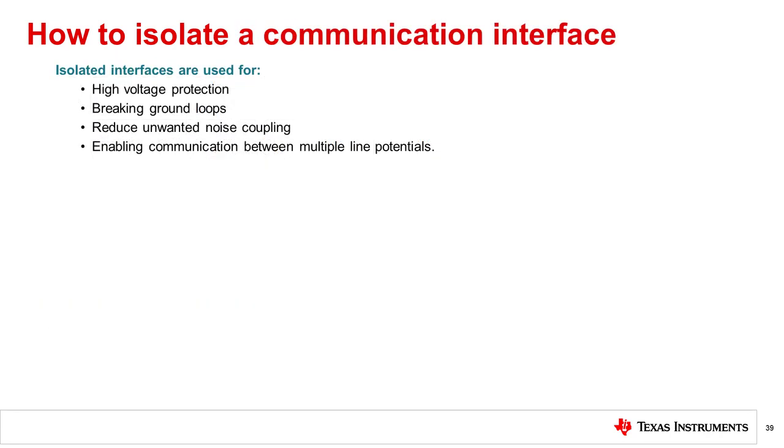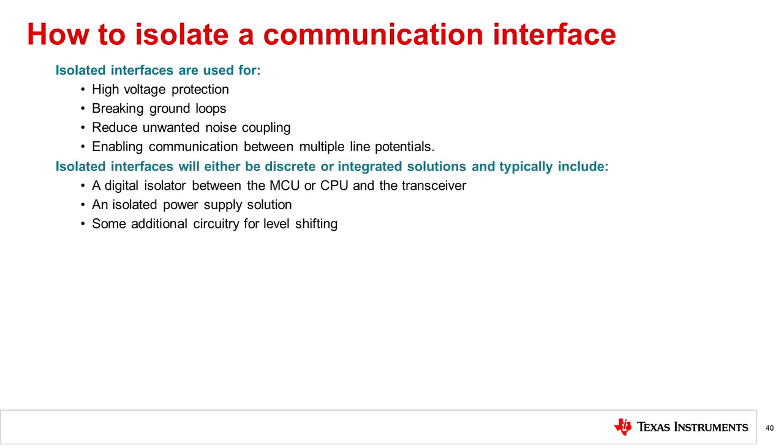This concludes a brief introduction to isolated interfaces. We introduced isolated interface components and that they are most commonly used to provide voltage protection, to break ground loops, reduce unwanted noise coupling, and enable communication between multiple line potentials. We shared that isolated interfaces will either be discrete or integrated solutions, and typically a digital isolator placed between an MCU or CPU and the transceiver interface device on the bus lines, as well as an isolated power supply solution and occasionally additional level shifting circuitry.